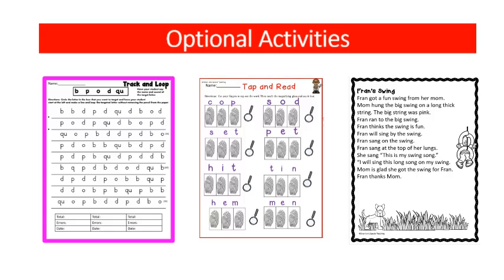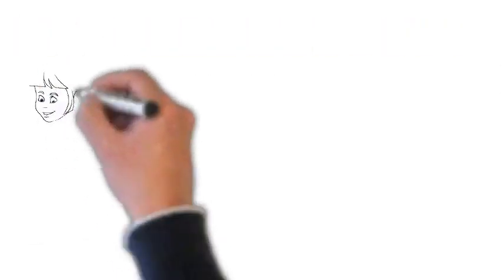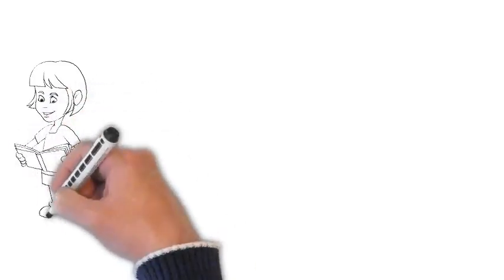There are some optional activities. One is included in your packet — Track and Loop — which helps with eye-hand coordination and the ability to recognize letters and sounds. The other two pictured here are activity packs with games and activities that correlate to this pack, as well as decodable stories that your students can read that correlate with this activity pack.